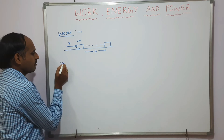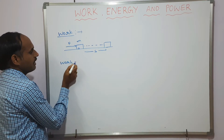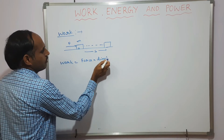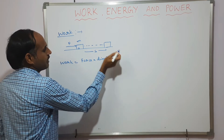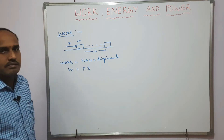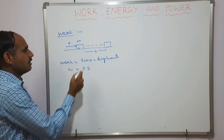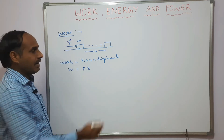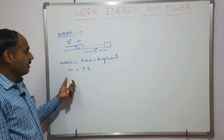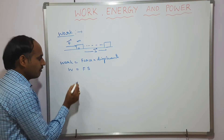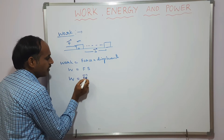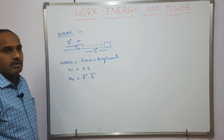Work done can be defined as the product of force and displacement. We can write W = F × s. Since force is a vector quantity F-bar and displacement is also a vector quantity, we can define this work done in vector form as W = F-bar · s-bar.